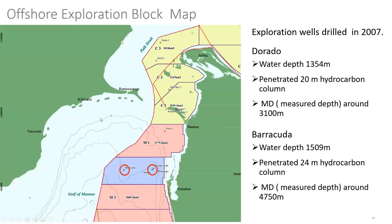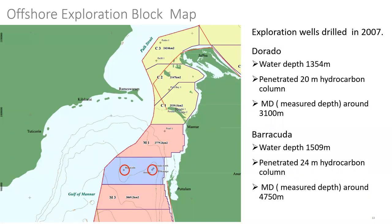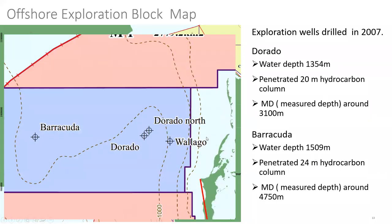This is the oil exploration block map I got from the website. Back in 2017, a couple of exploration wells were drilled in that region. Dorado and Barracuda were the wells that penetrated 20 meters of hydrocarbon columns. Notice the water depth: 1,300 meters for one well and 1,500 meters for another. This indicates that we need semi-subs or drill ships for the drilling operation — I initially thought it would be shallow in the Marna Basin, but the data shows otherwise.